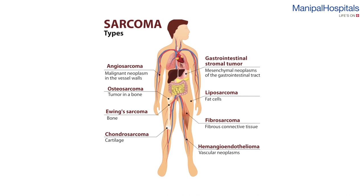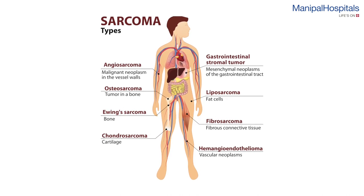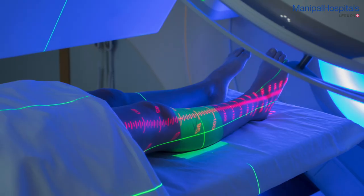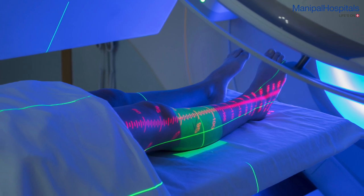So what is the treatment of Sarcoma? Sarcoma treatment depends mainly on two things: the type of Sarcoma and the stage. The type of Sarcoma can be found out by doing a needle biopsy through image guidance. The stage of Sarcoma can be found by local imaging techniques — CT scan, MRI — and whole body scanning called PET scan.